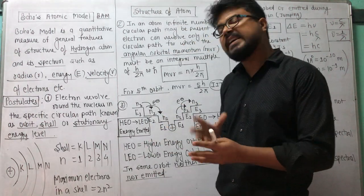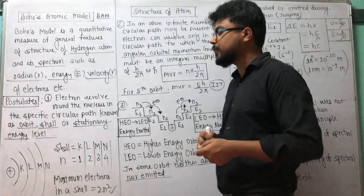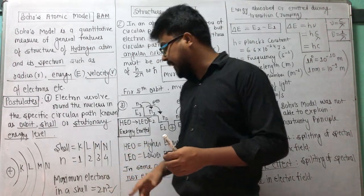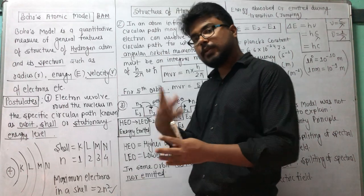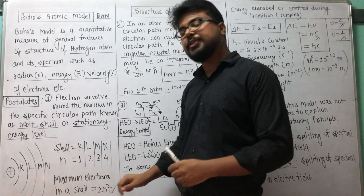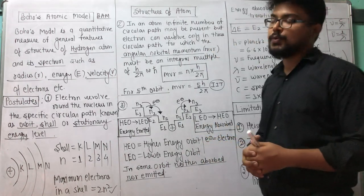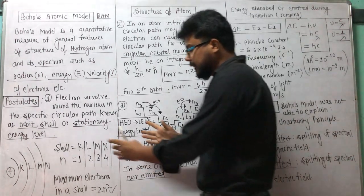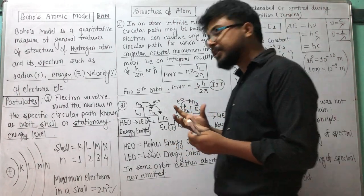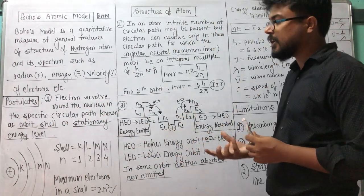The maximum number of electrons in a shell is given by the formula 2n². So for the first shell (K), electrons = 2×1² = 2. For the L shell, electrons = 2×2² = 8. For the third shell (M), electrons = 2×3² = 18. And for the fourth shell (N), electrons = 2×4² = 32. So this is all about the maximum electrons in a shell, which is where electrons revolve around the nucleus in fixed energy levels.